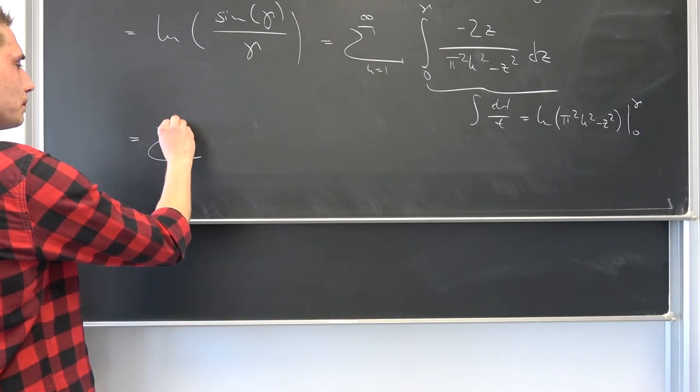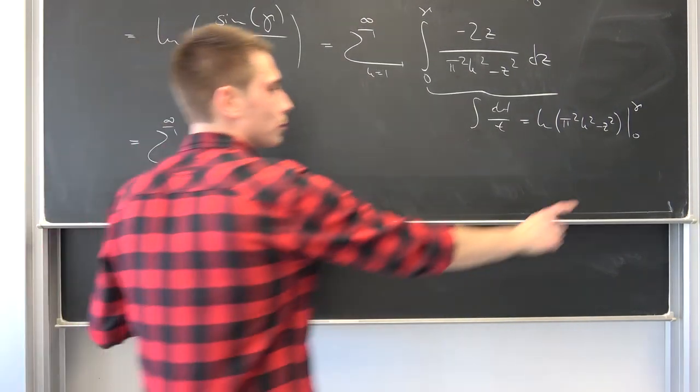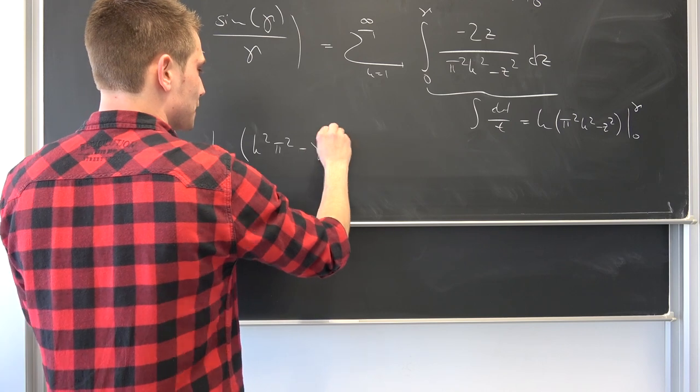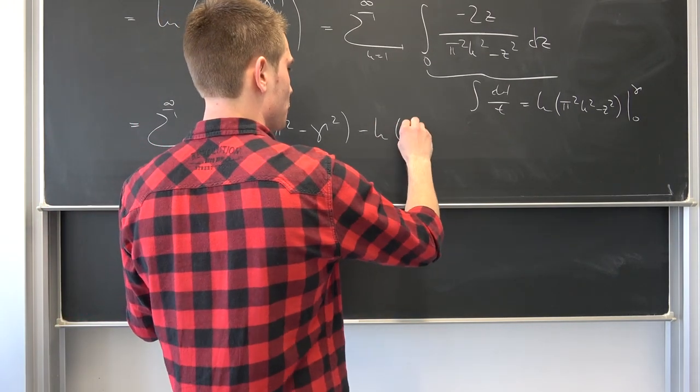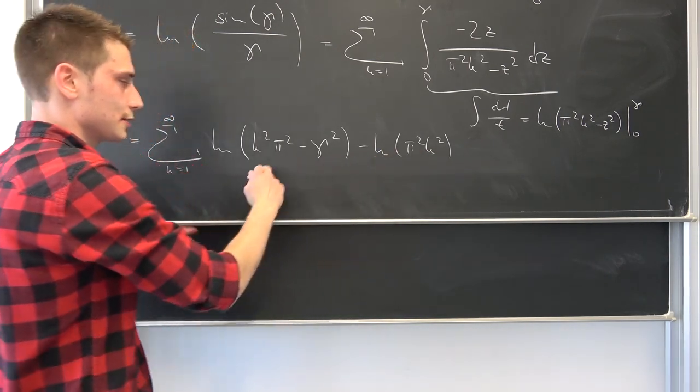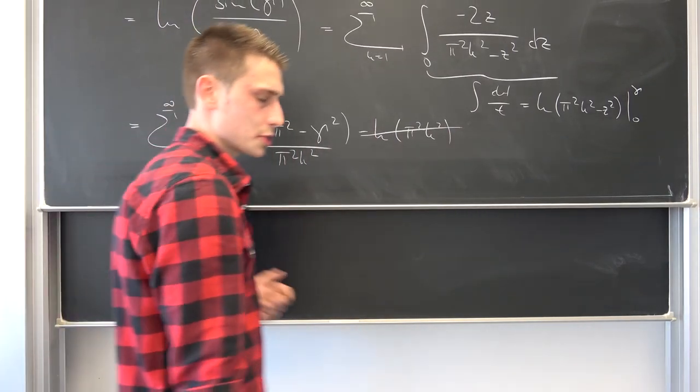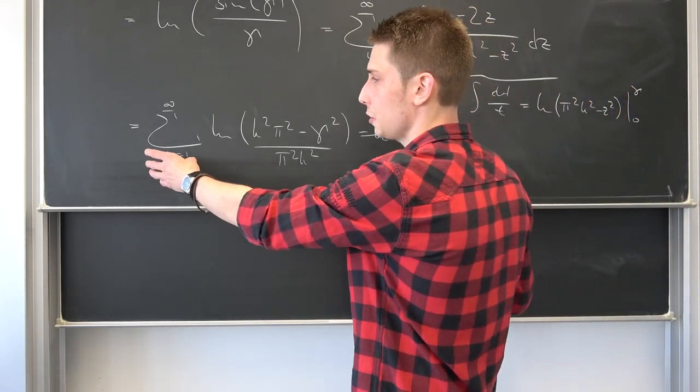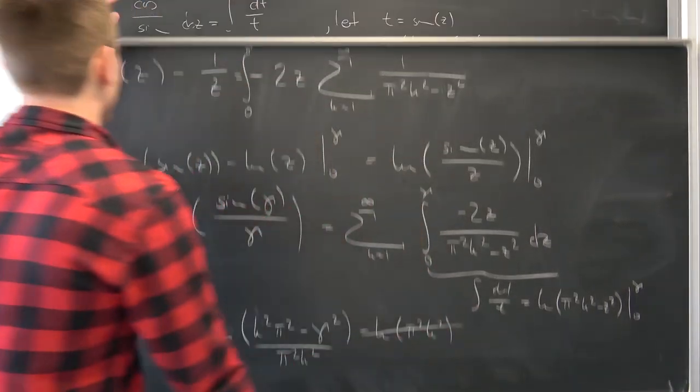We are going to get that this is the sum running from 1 to infinity of the natural log of, if we plug gamma into here, it's just what it is, so k squared times pi squared minus gamma squared. If we let z approach zero right here, it's going to be just natural log of pi squared times k squared. We can use the natural log properties to basically bring this pi squared k squared into here as a division, getting rid of this. Also we have a nice little functional equation in complex numbers regarding this natural log right here. We can turn this outer summation into the inner multiplication of those arguments.